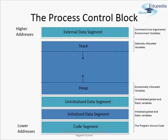This is the basic memory layout of a C program, known as the process control block. Most operating systems run programs as processes, and each process is allocated some memory inside the system's RAM. That memory is segmented as you are seeing in front of you for a C program.